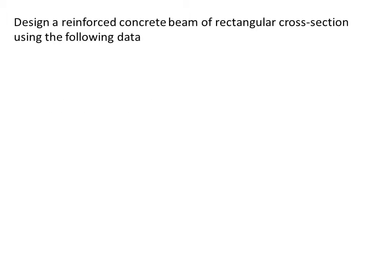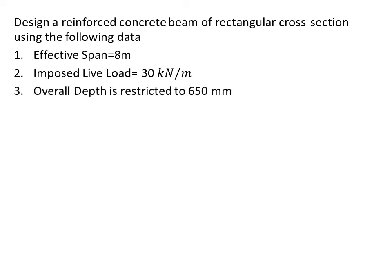Design a reinforced concrete beam of rectangular cross section using the following data: effective span is 8 m, imposed live load is 30 kN/m, overall depth is restricted to 650 mm, use M20 and Fe415. When a design question is given, what is the first thing that we do?